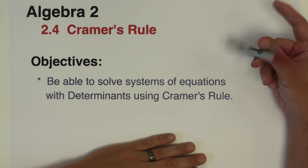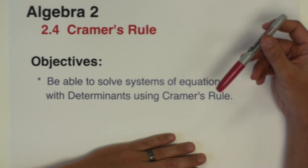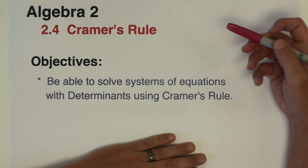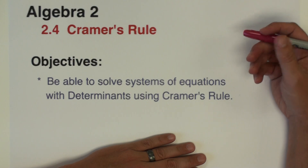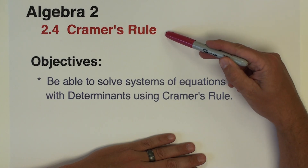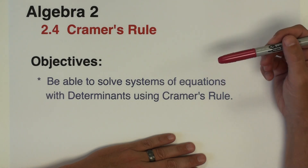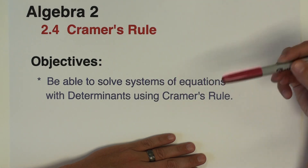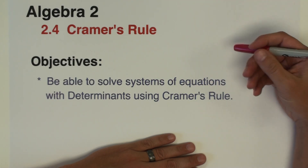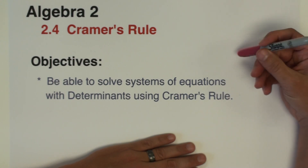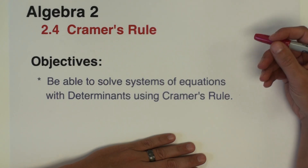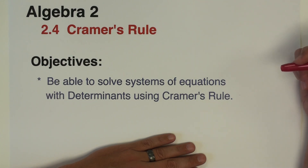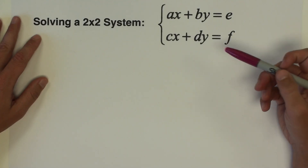Hello everyone and welcome to another math tutorial. In this video we're going to go over an application of the determinants that we worked on in the previous video, called Cramer's Rule. Cramer's Rule is going to allow us to solve systems of equations — the same types of problems we used substitution and elimination on in the previous chapter — but now we'll do that with determinants of matrices.